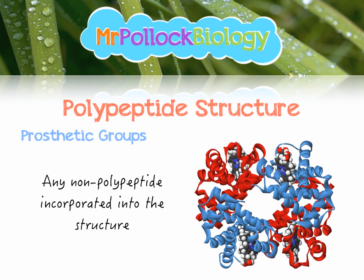As for prosthetic groups, if we look carefully in each of those subunits, we see another structure — an iron ion, an Fe2+ group. This is a non-polypeptide component that is part of the structure, and it's what gives hemoglobin its oxygen-carrying ability. We'll look at that in another video.